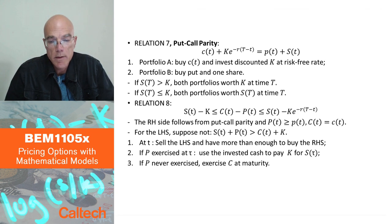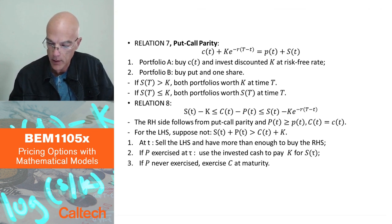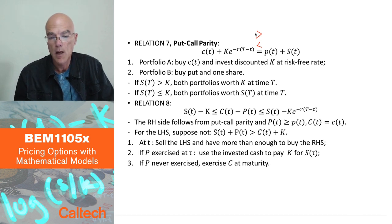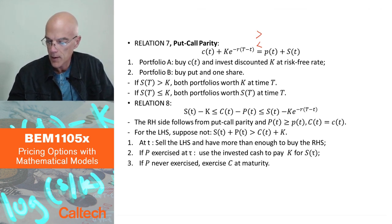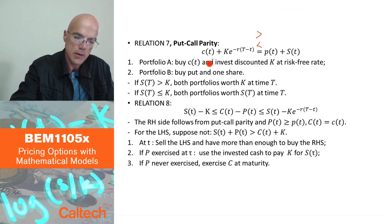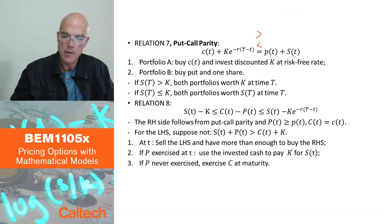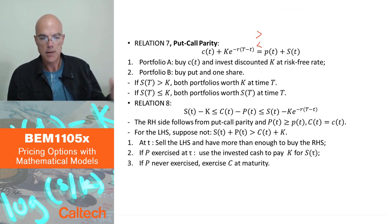Let's show this. I could do this by the usual argument — suppose it's strictly less, suppose it's strictly larger, construct two arbitrages, and be done. However, I will do it in a single step by using the Law of One Price. I'll find a portfolio for which I know the initial price, show those portfolios have the same payments at maturity, and therefore by the Law of One Price they have the same price today.